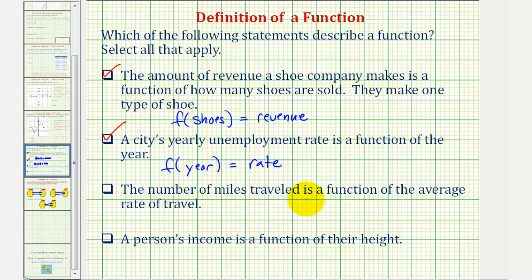Next, the number of miles traveled is a function of the average rate of travel. In this case, the input would be the average rate of travel and the output would be the number of miles traveled.